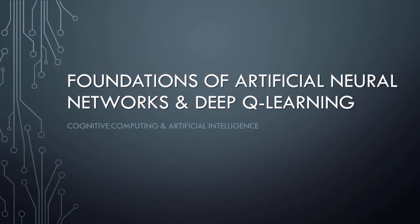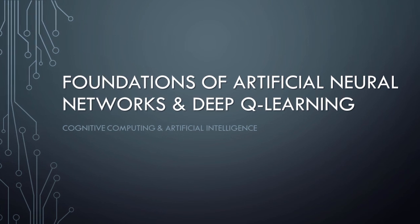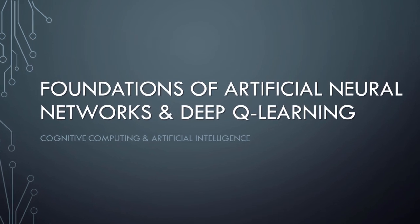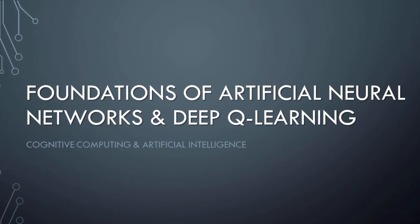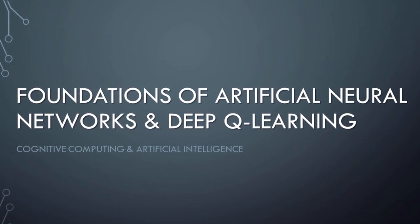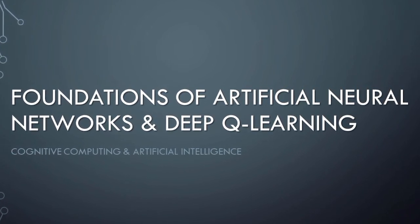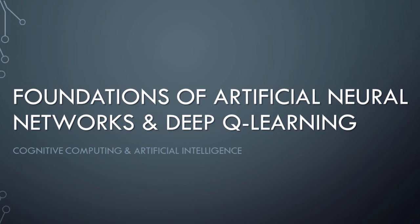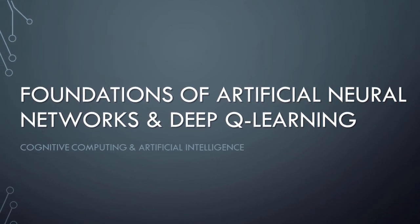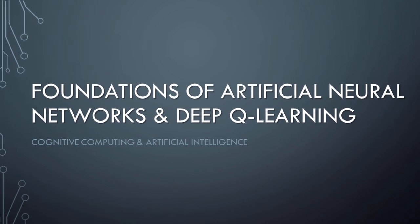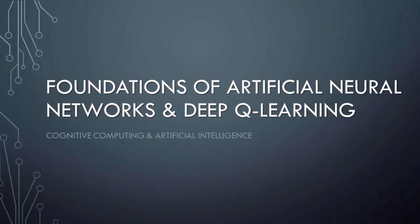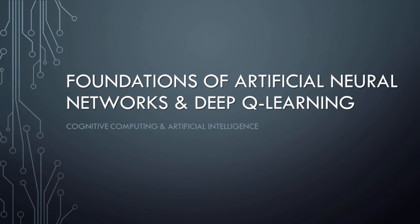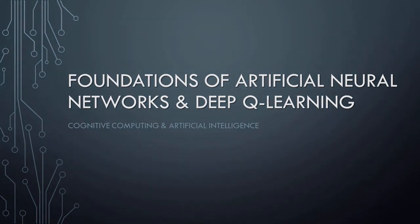Now that we have a good understanding of the principles of artificial neural networks and deep Q learning, we can begin to create sophisticated AI models that rely on these technologies. In the next video in this series, we'll see how neural networks and deep Q learning based AI can be used to create a self-driving car, with plenty of hands-on experience building an AI model in Python. Thus ends our lesson on the foundations of artificial neural networks and deep Q learning — I hope you learned something interesting, and until next time, have a great day.